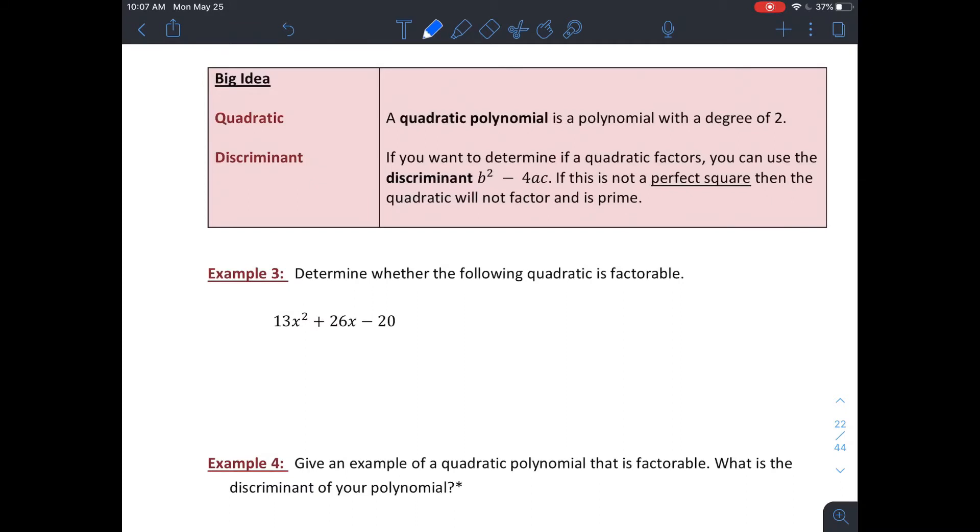Some of the most common polynomials we've dealt with are quadratic polynomials that have a degree of 2. If you want to determine if a quadratic will factor into two binomials, you can look at your discriminant, which is b squared minus 4ac, the part that's under your radical and your quadratic formula. If that's not a perfect square, then your quadratic's not gonna factor, and you know it's prime.